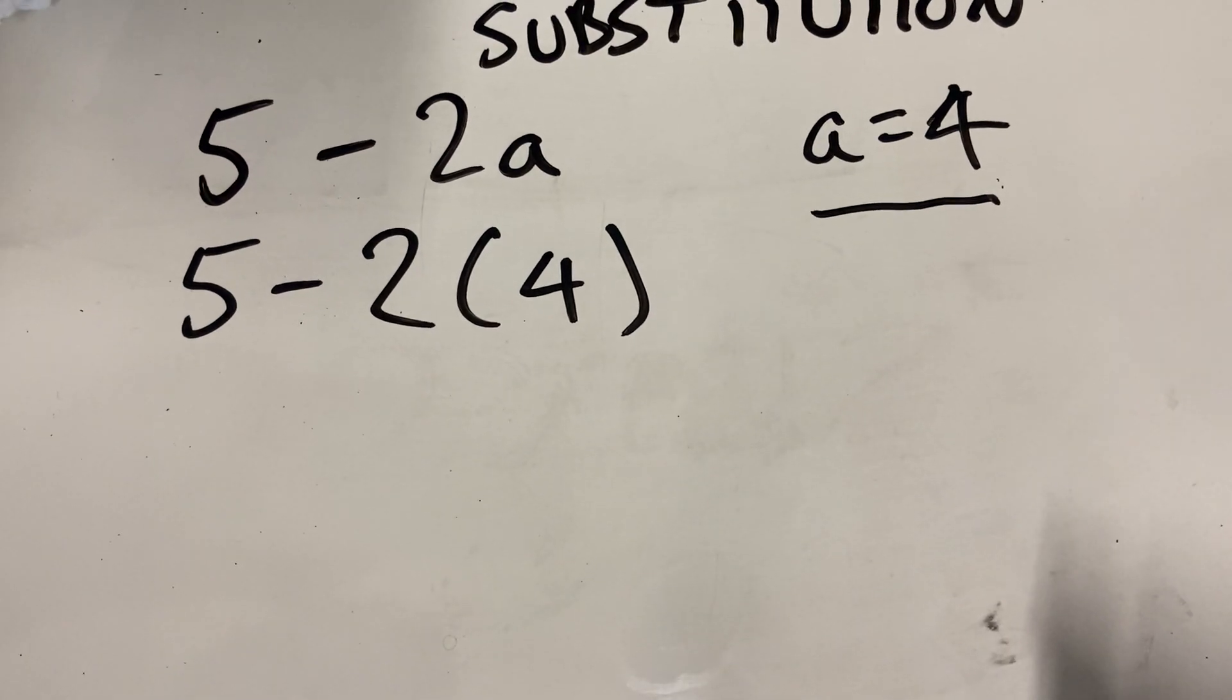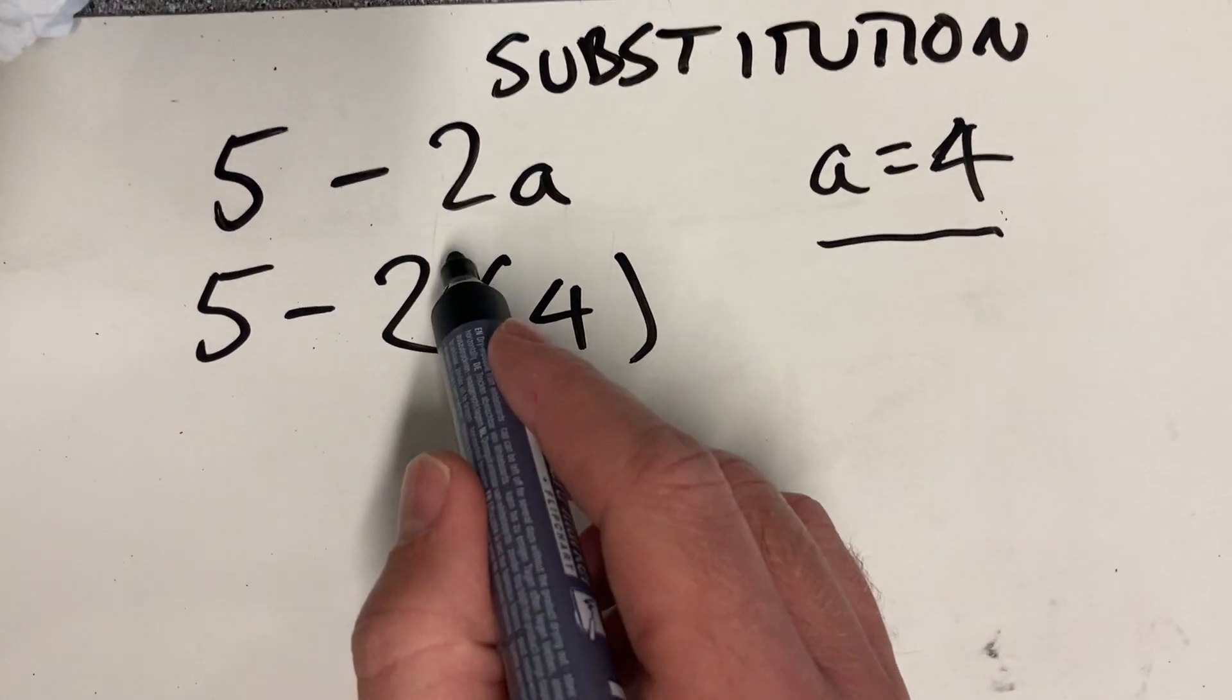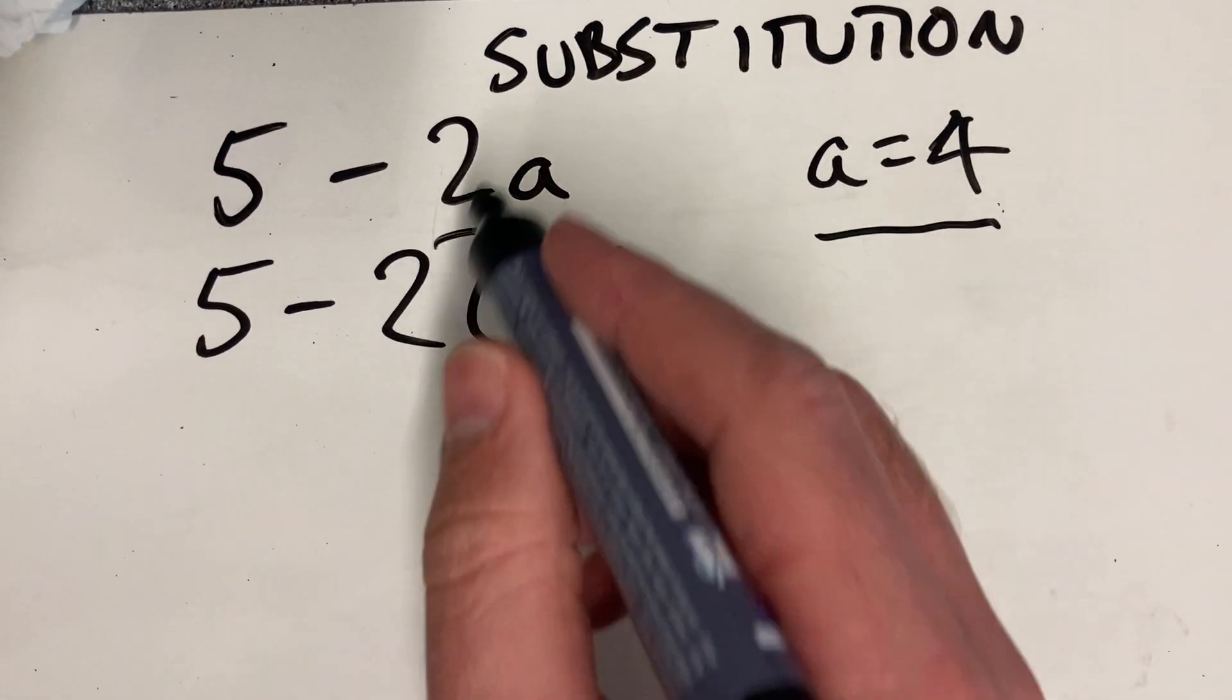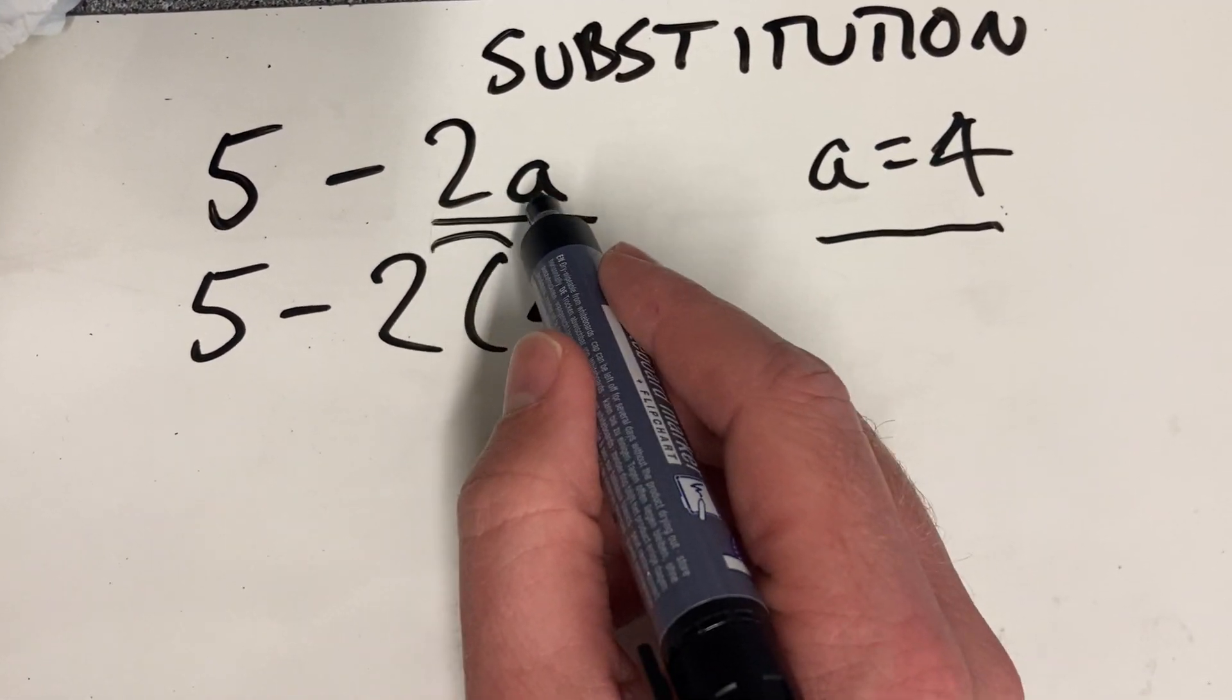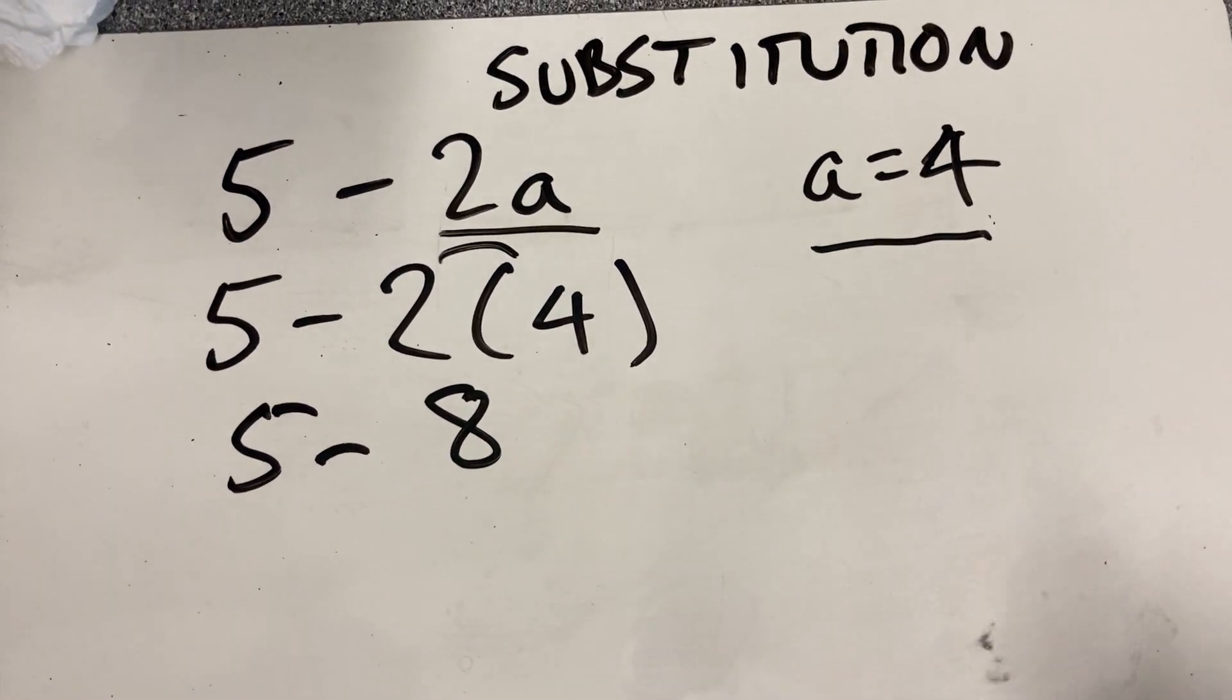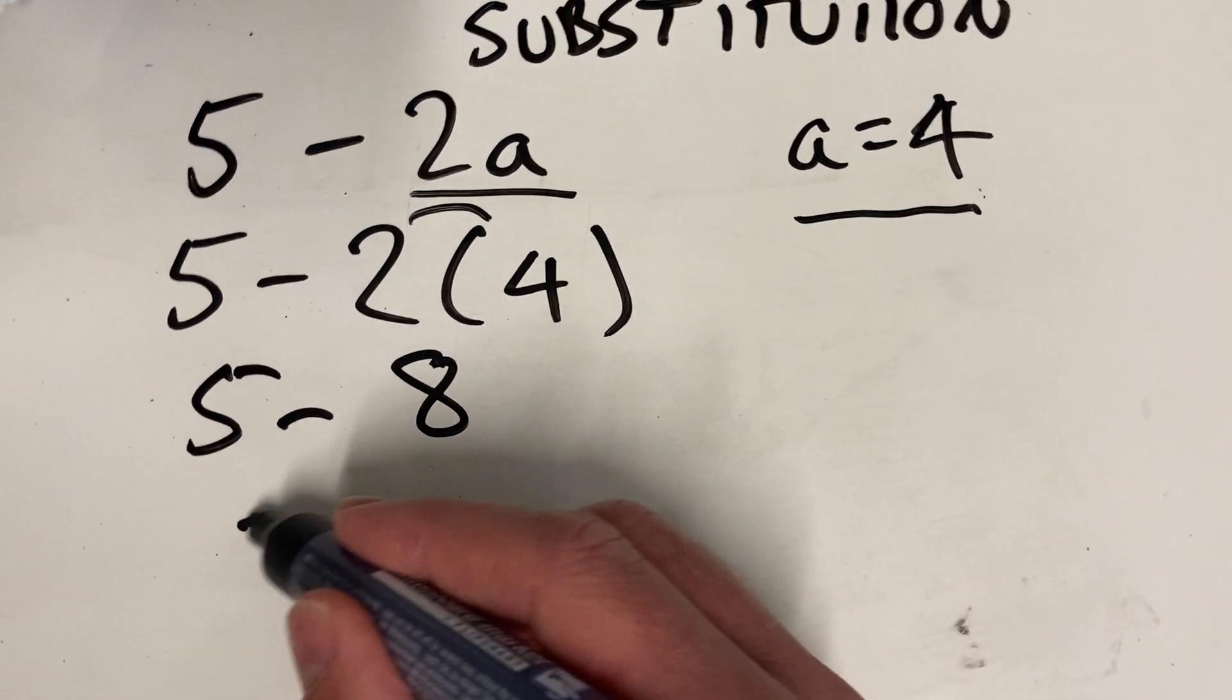What do I do next? 2 times 4. Okay, because that bracket on the outside means 2 times 4, and in algebra notation, 2a means 2 times a. So it's 5 minus 8. And what is 5 minus 8? Minus 3.